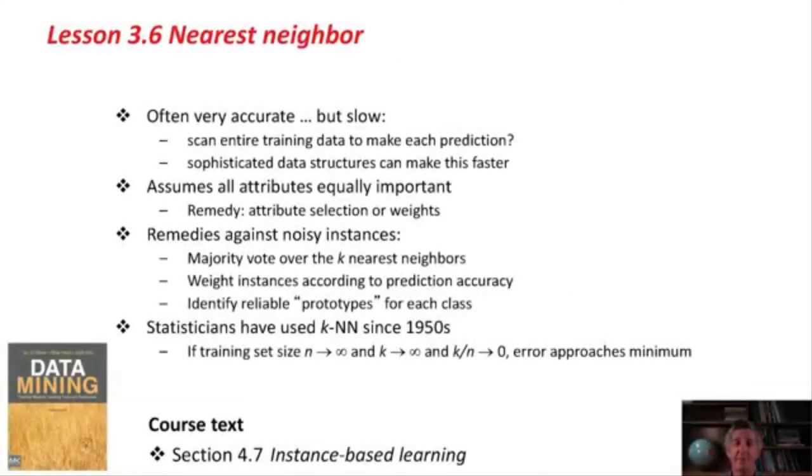The nearest neighbor is a really good method. It's often very accurate. It can be slow, and simple implementation would involve scanning the entire training data set to make each prediction, because we've got to calculate the distance of the unknown test instance from all of the training instances to see which is the closest. But there are more sophisticated data structures that can make this faster, so you don't need to scan the whole data set every time. It assumes all attributes are equally important. If that wasn't the case, you might want to look at schemes for selecting attributes or weighting attributes, depending on their importance.